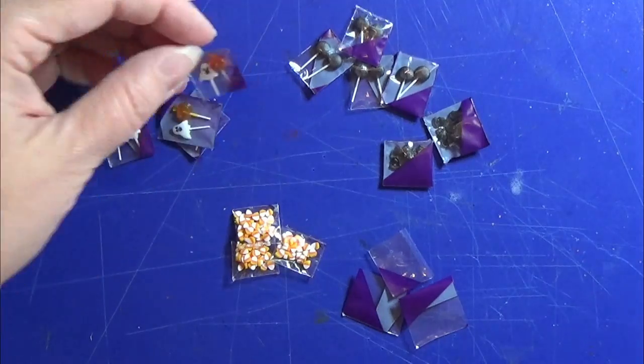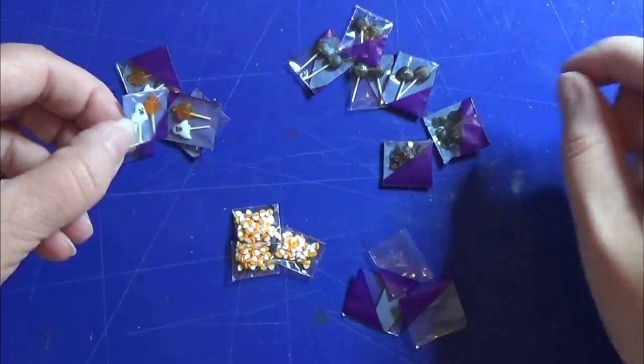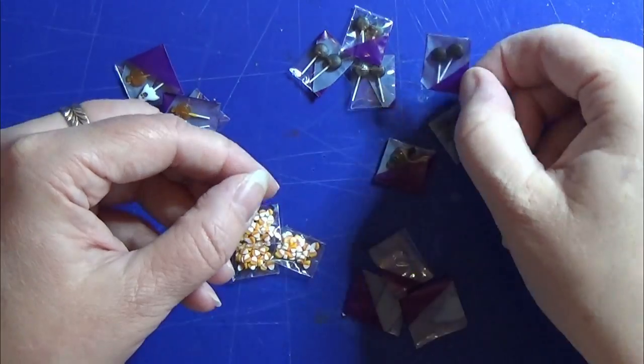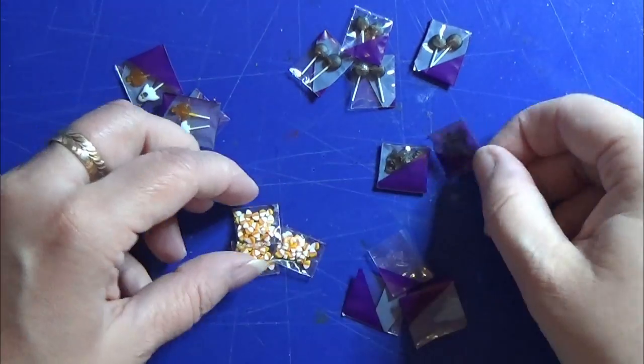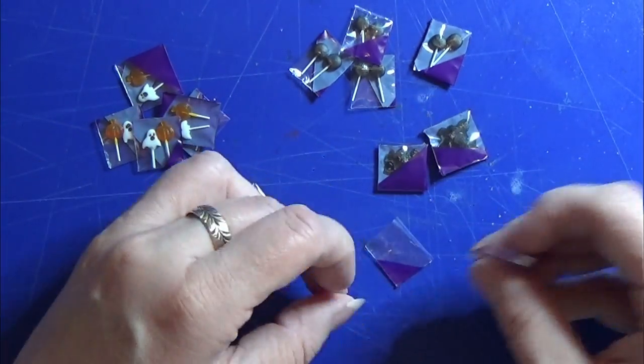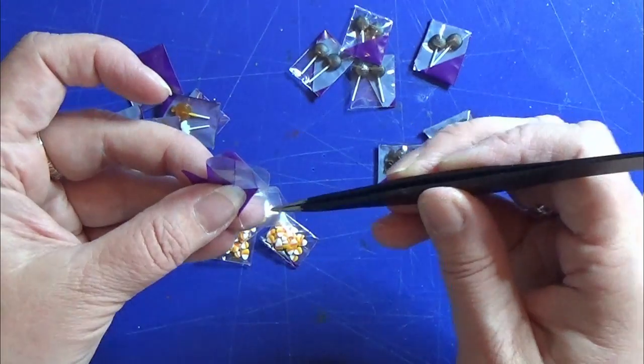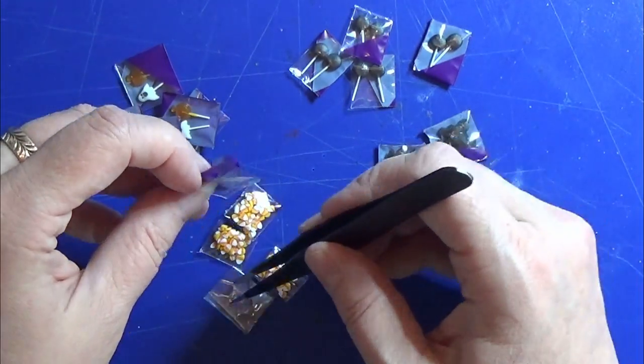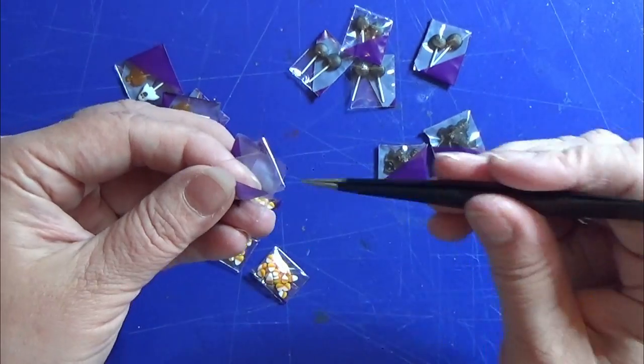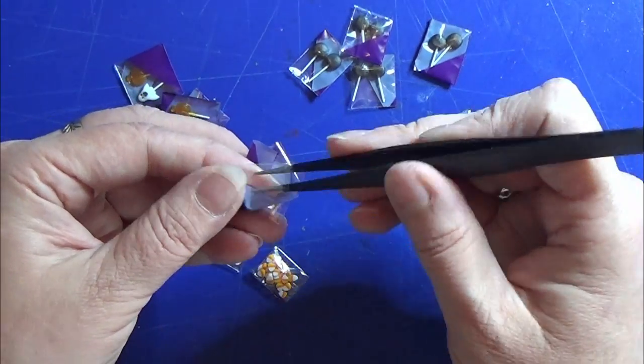So I used a lot of the original bag to make all these small candy bags here for the one to twelve. There was actually enough material of the original bag to make a few extra bags out of it. So I have a few of them for when I'm making some more candy that I can put in there.